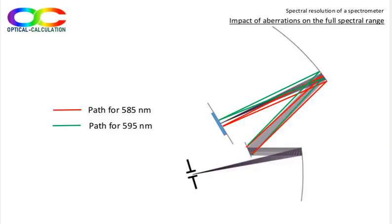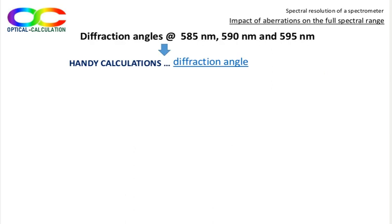We have also to evaluate the performance of the optical system across the spectrum. For that, we will evaluate the performance at the minimum and maximum wavelength of the range. Practically, we just have to rotate our fake flat mirror replacing the grating such that the change in reflection angle equals to the change in diffraction angle corresponding to the considered wavelength. Let's first calculate these changes in diffraction angle. For that, we come back to the handy calculation tool and use the calculation page diffraction angle for reflective grating.